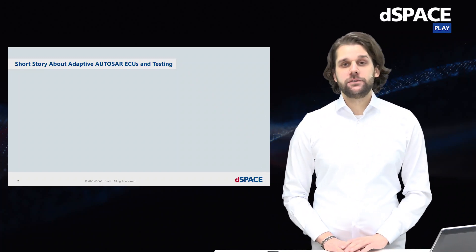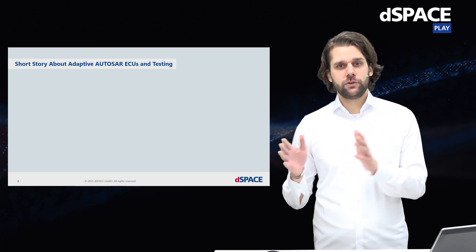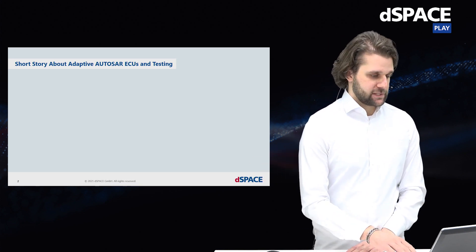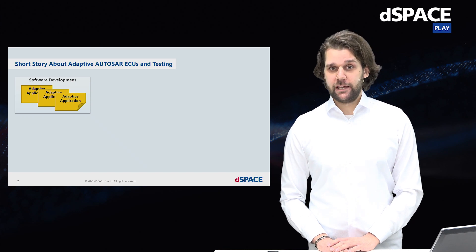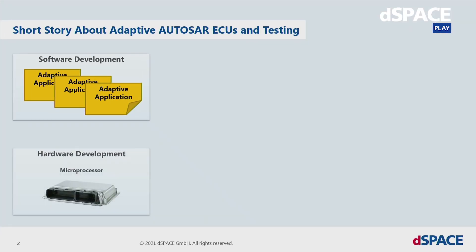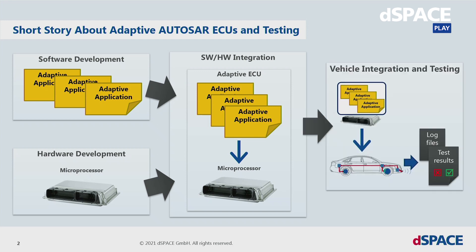I would like to start with a sketch outlining the road from software development to integration of the software in the vehicle. Software developers implement the adaptive applications; in parallel, another company will develop the ECU hardware. We then bring together the software and hardware to create the adaptive ECU for the vehicle, integrate it, and do test drives to collect test data.